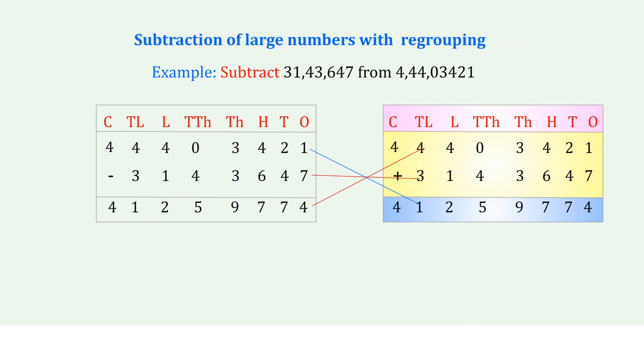The numbers are arranged in the table: Crores, Ten Lakhs, Lakhs, Ten Thousands, Thousands, Hundreds, Tens, Ones. The minuend digits: 3,9,1,2,1,3,1,1,1,1 and subtrahend 4,4,4,0,3,4,2,1 minus 3,1,4,3,6,4,7. We get: 4,1,2,5,9,7,7,4.